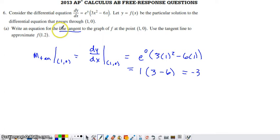So really all we need to do to write the equation of the tangent line at this point is we need to write the equation of a line that has this slope, negative 3, and goes through this point, 1, 0.